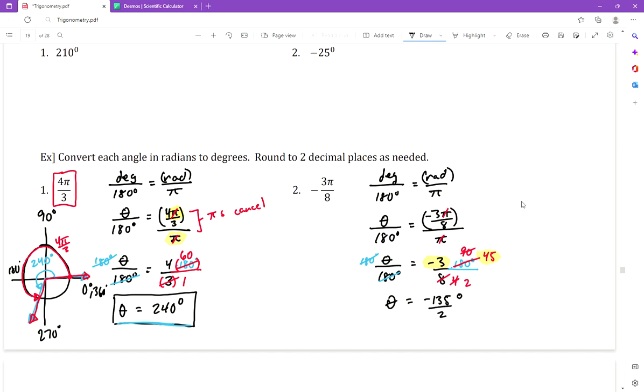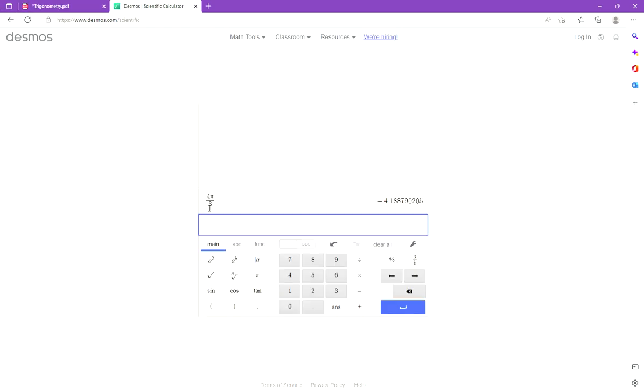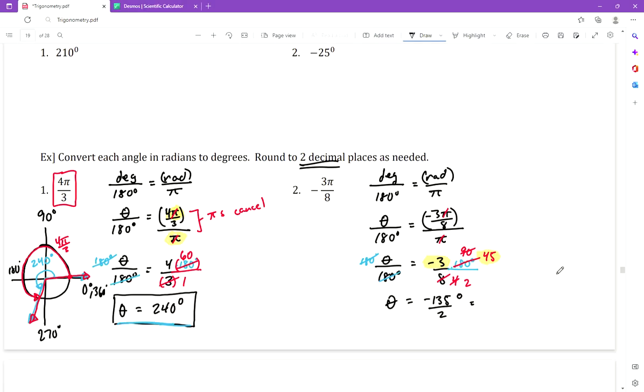That is -135 and then 2 is just left alone in the bottom, so as a fraction it's that. Here's where it looks like we should probably do the rounding to two decimals. -135 divided by 2 is -67.5. So that's -67.5 degrees, that's the same angle just measured in degrees.